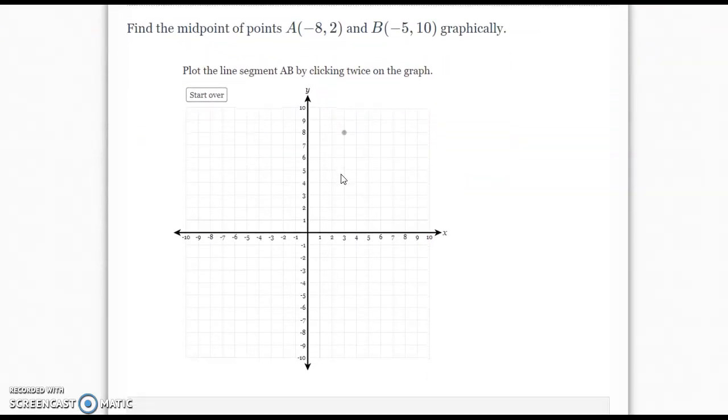So let's go ahead and start with this example right here. It says, find the midpoint of points A(-8, 2) and B(-5, 10) graphically. There is a formula you can use, but I also want you to be able to think about this and be able to do it on a graph. So it says, plot the line segment AB by clicking twice on the graph. So we've got to plot AB.